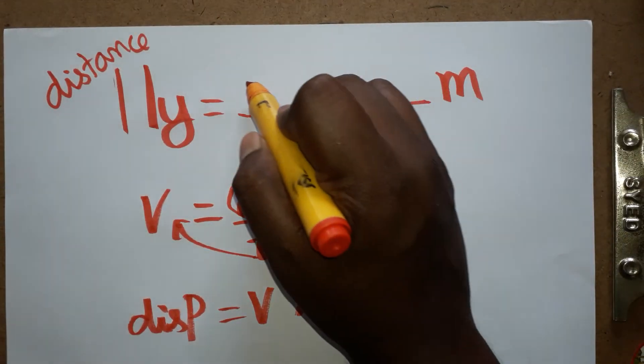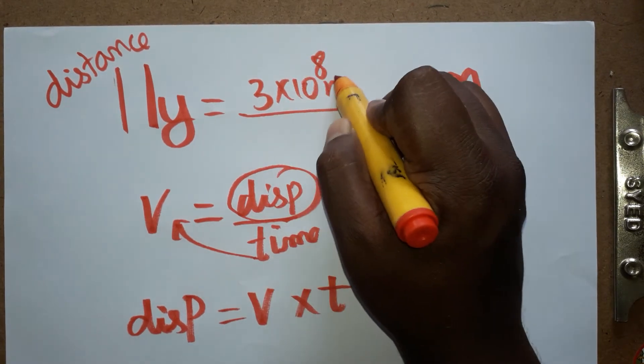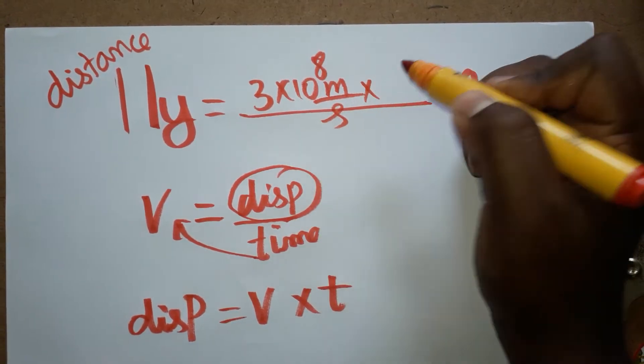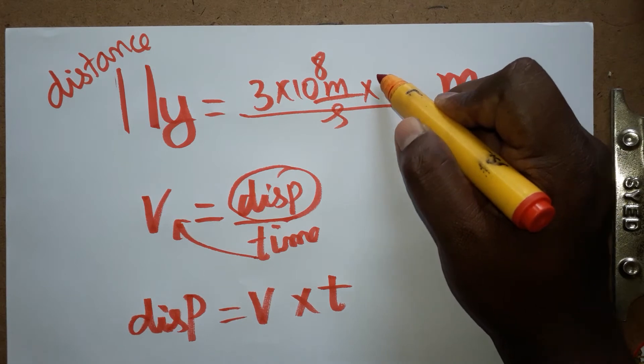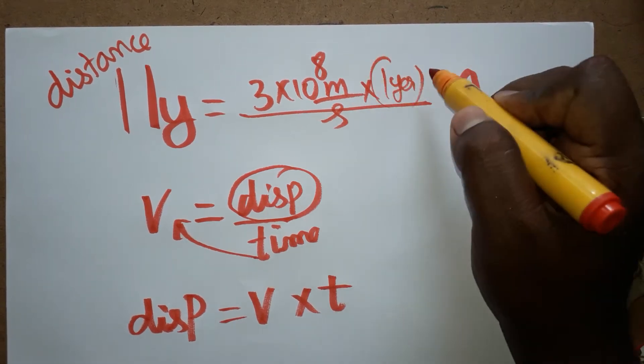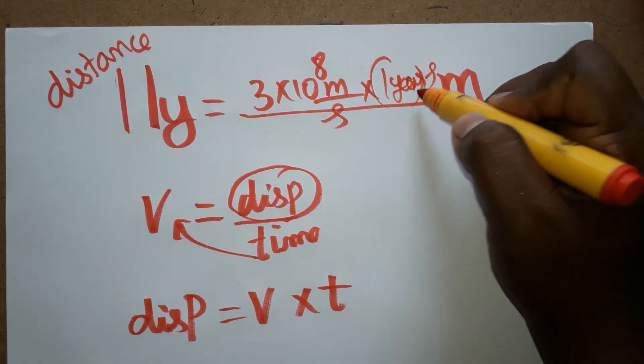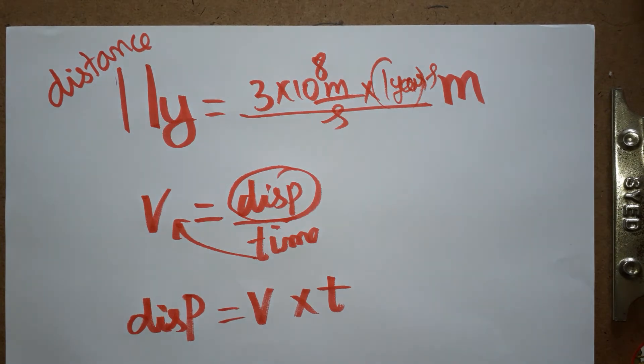The speed of light is 3×10^8 meters per second. We need to find how many seconds are in one year. When we multiply these together, we will get one light year. Now I'm going to show you the calculation for one light year's value.